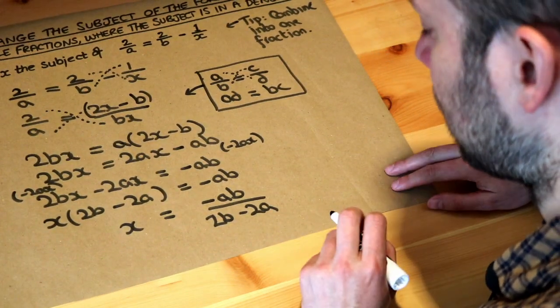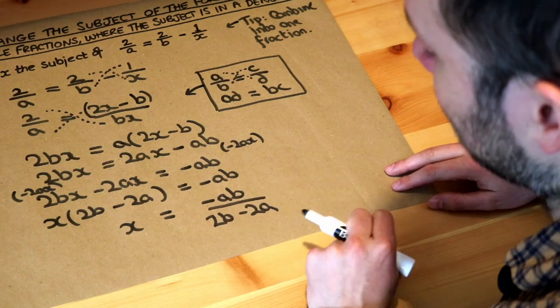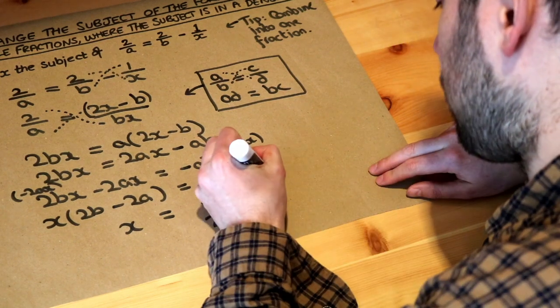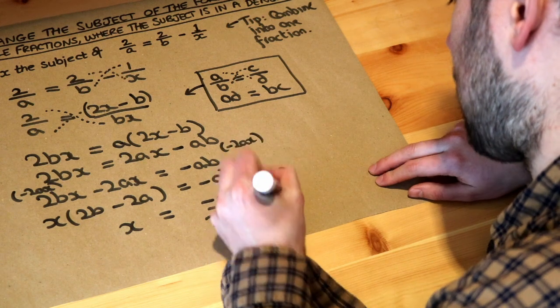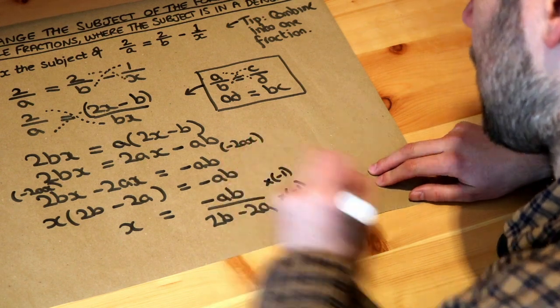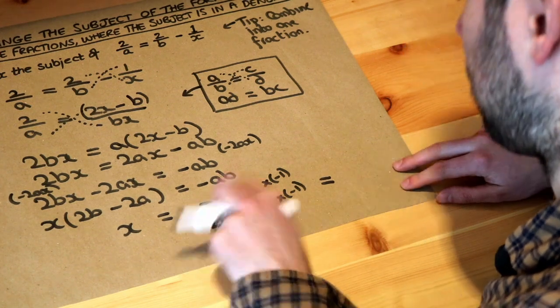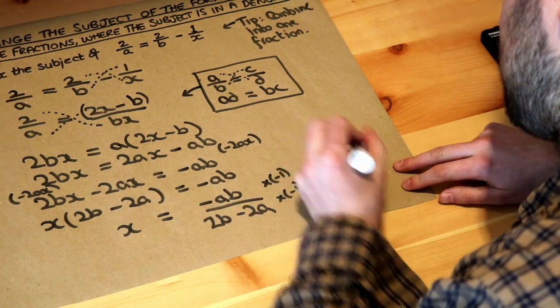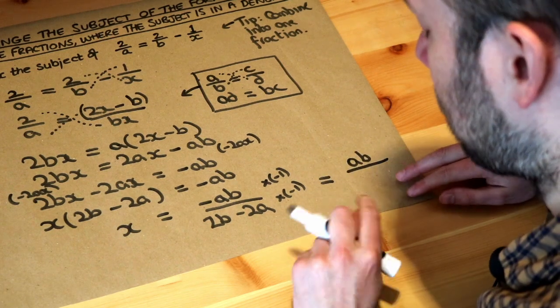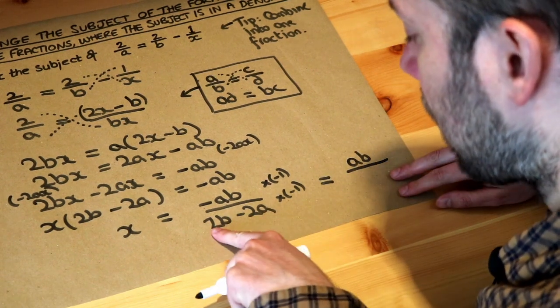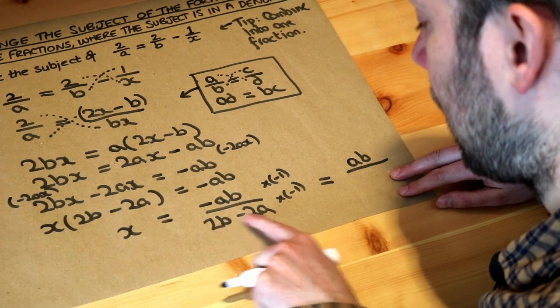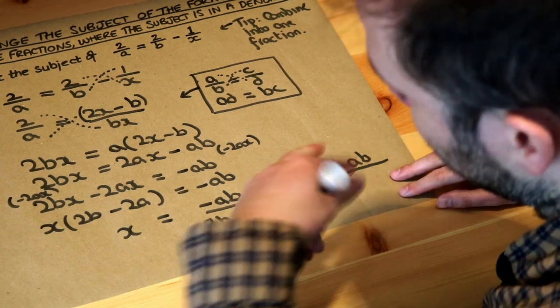Now we could tidy this up if we wanted to, because I don't like expressions starting with a negative term. So we could multiply top and bottom of our fraction by minus 1, and that's going to tidy things up a bit. So if we times the top by minus 1, the minus becomes a plus, so it's just positive ab. And we multiply the bottom by minus 1, that becomes minus 2b and that becomes positive 2a. It just reverses the signs.